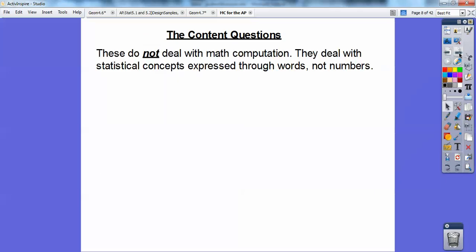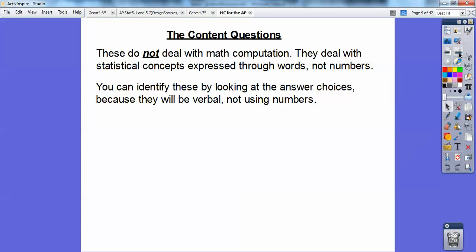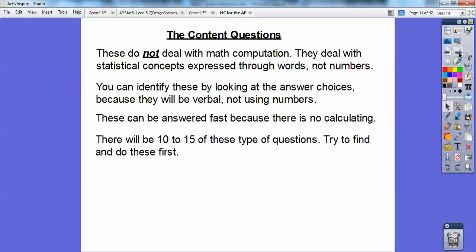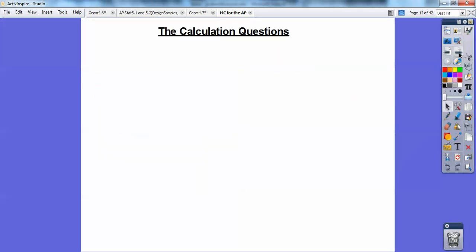Content questions don't involve math computation—they deal with statistical concepts expressed through words, not numbers. You can identify these by looking at the answer choices, which will be verbal without numbers or equations. These can be answered quickly if you know your statistics terminology. There will be 10 to 15 of these questions. Try to answer these first because they're fast. If you don't know them, we'll discuss educated guessing later.